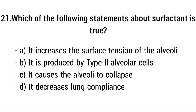Question number twenty-one. Which of the following statements about surfactant is true? The right answer is option B: It is produced by type 2 alveolar cells.